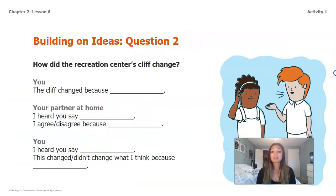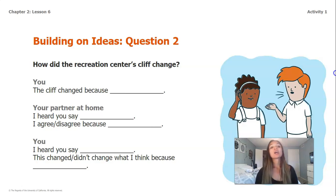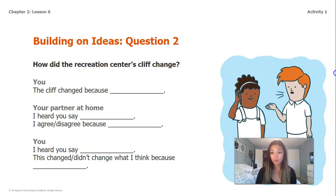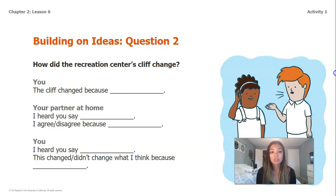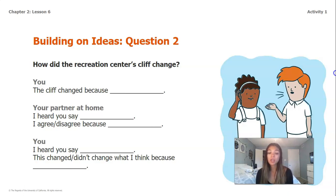We're going to repeat that same three-step process with another question now. Remember: you are going to state your idea, your partner is going to repeat what you said and then agree or disagree, and then you will repeat what your partner said and tell them if it changed your mind or not. Our second question is: how did the recreation center's cliff change? Go ahead and pause the video and use these sentence stems to answer the question with somebody at home.